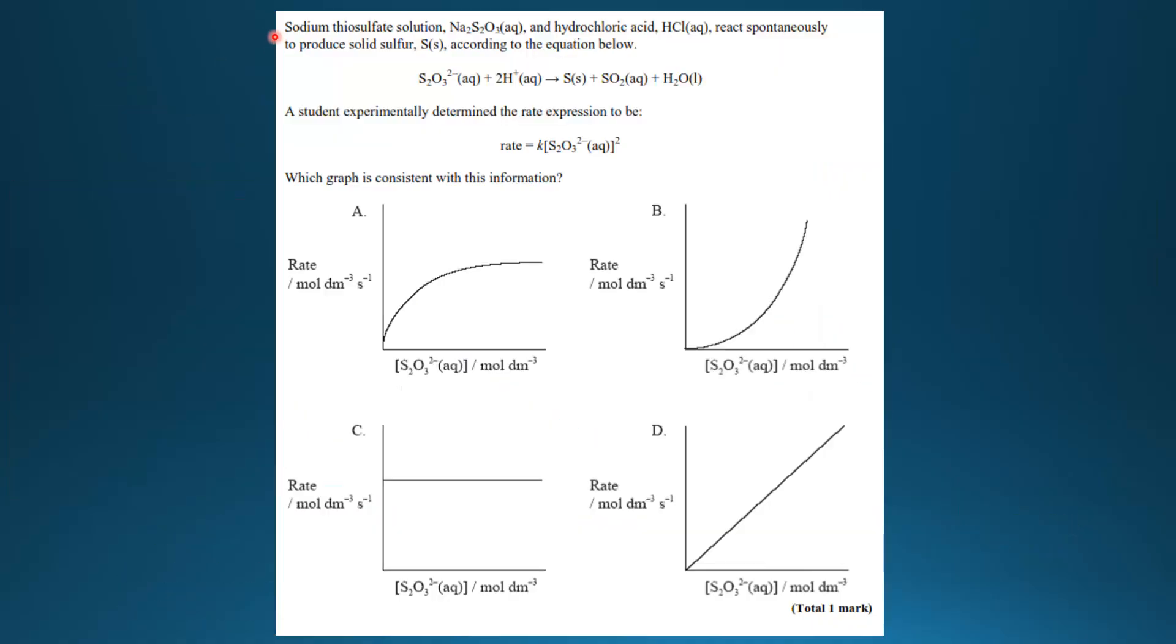So here's an example question. A student experimentally determined the rate expression for this reaction to be rate equals K times the concentration of the thiosulfate ion to the power 2. And you're given four graphs, A, B, C, and D. Which graph is consistent with this information? So we look at A first. None of the graphs that we looked at just now have this kind of shape, so it's not A.